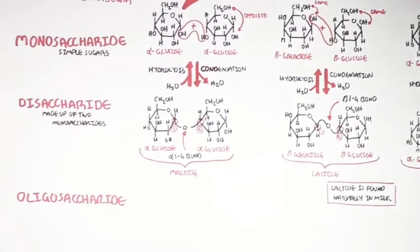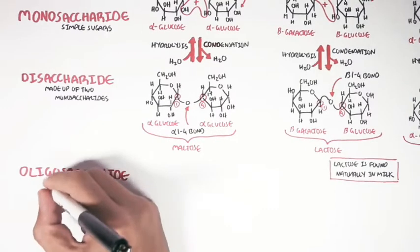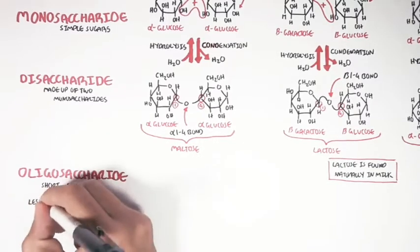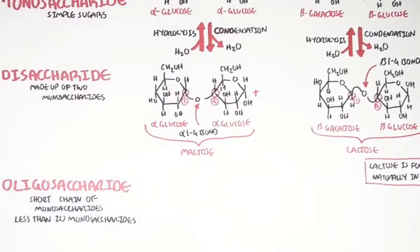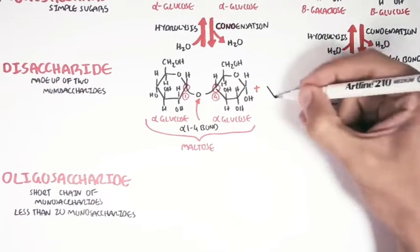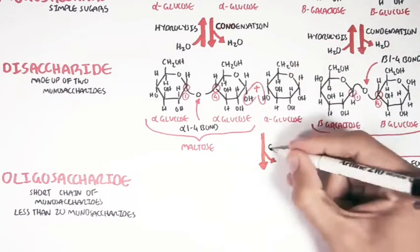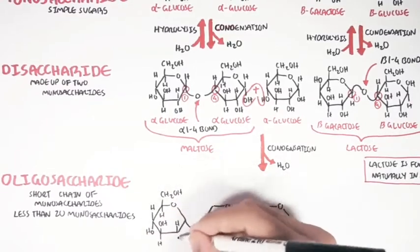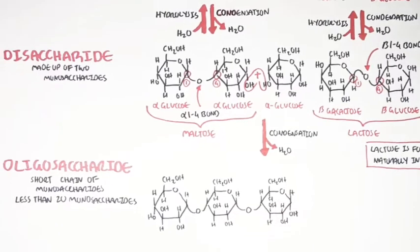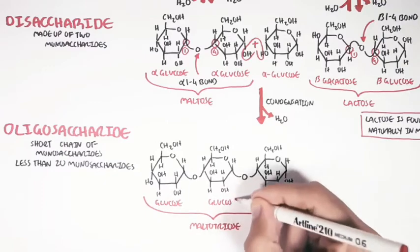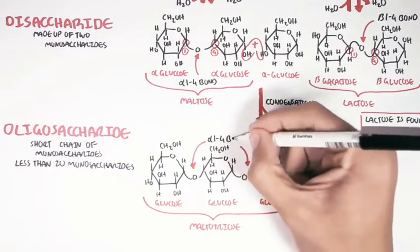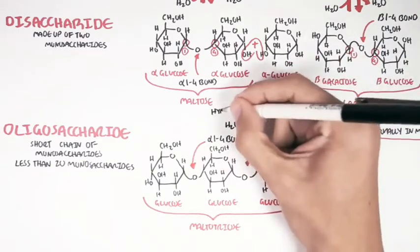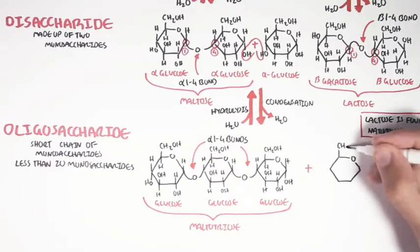Oligosaccharides consist of short chains of monosaccharides, typically less than 20 monosaccharides linked together. A disaccharide can actually be referred to as an oligosaccharide. For example, if we take maltose and add another glucose molecule to it through a condensation reaction, we form an additional alpha-1,4 glycosidic bond. This oligosaccharide is called maltotriose — tri as in three — made up of glucose linked by alpha-1,4 glycosidic bonds. To break down these bonds requires hydrolysis, the addition of water. This structure can keep growing with the addition of more glucose molecules.